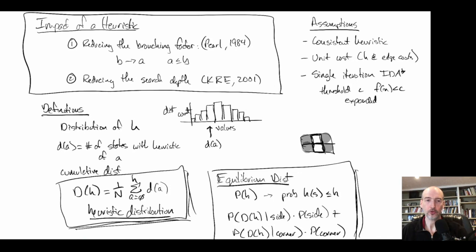We're done with this analysis. In the next lecture, we will be continuing to look at the impact of inconsistent heuristics, which we've been putting off for a while. Here we've assumed a consistent heuristic, and so now we're going to see what happens with inconsistent heuristics in practice. I hope to see you in that next lecture.